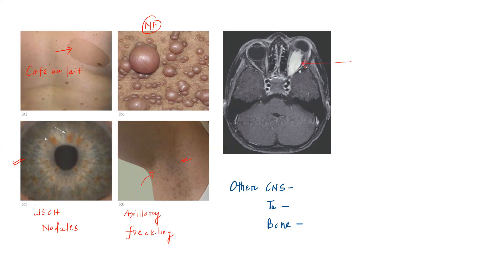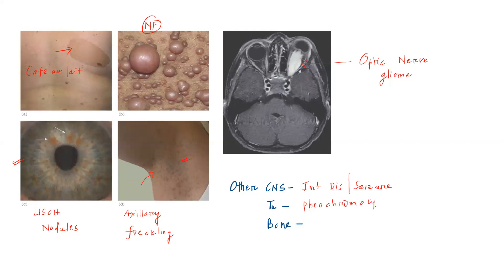You can also appreciate optic nerve glioma. Apart from that, patients can have other CNS manifestations like intellectual disability and seizures. Other tumors include pheochromocytoma, which is an adrenal medullary tumor. Patients can also have bony abnormalities such as sphenoid bone dysplasia.